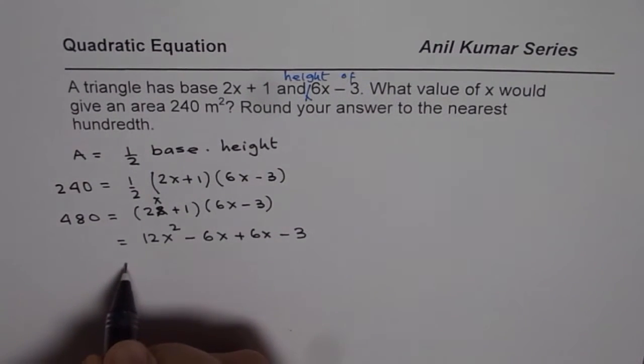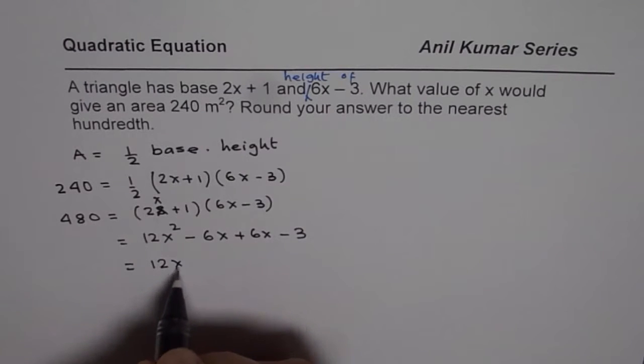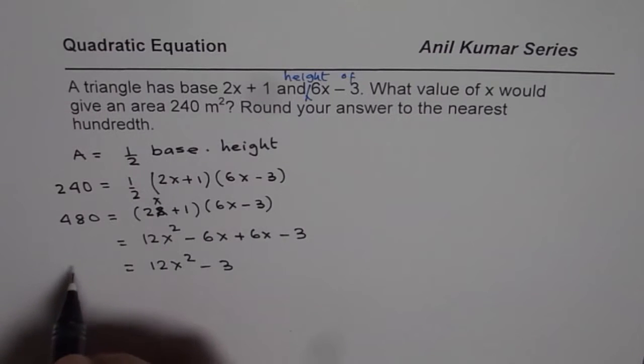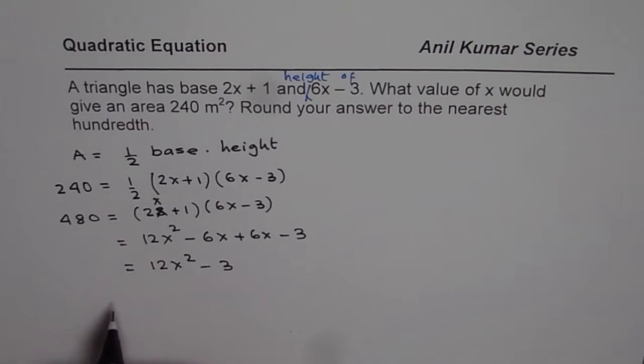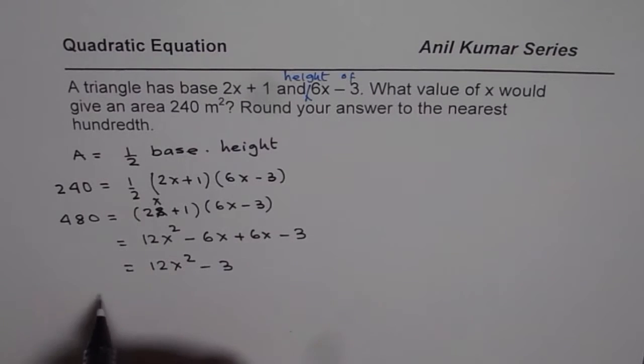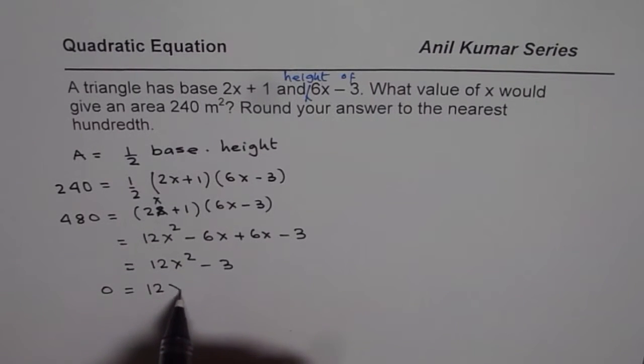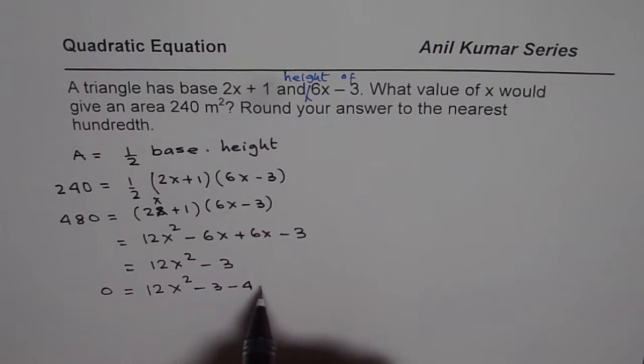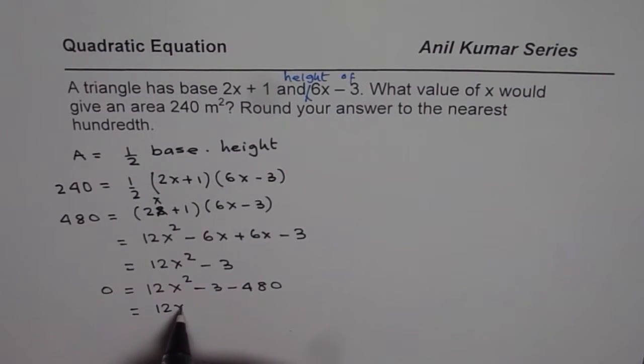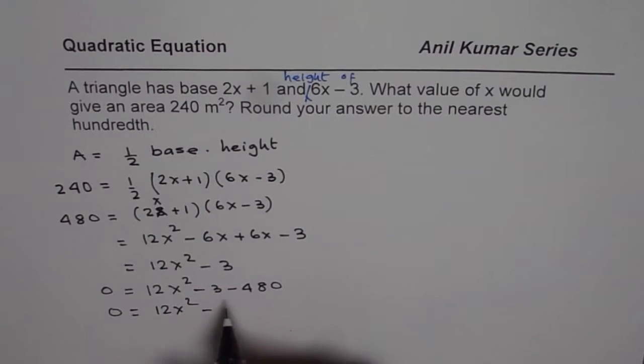Now we can combine these terms. So we get 12x squared minus 3. And on the left side we have 480. We can bring 480 to the right side, so we get 0 equals 12x squared minus 3 minus 480. That gives you a quadratic equation, which is 12x squared minus 483.